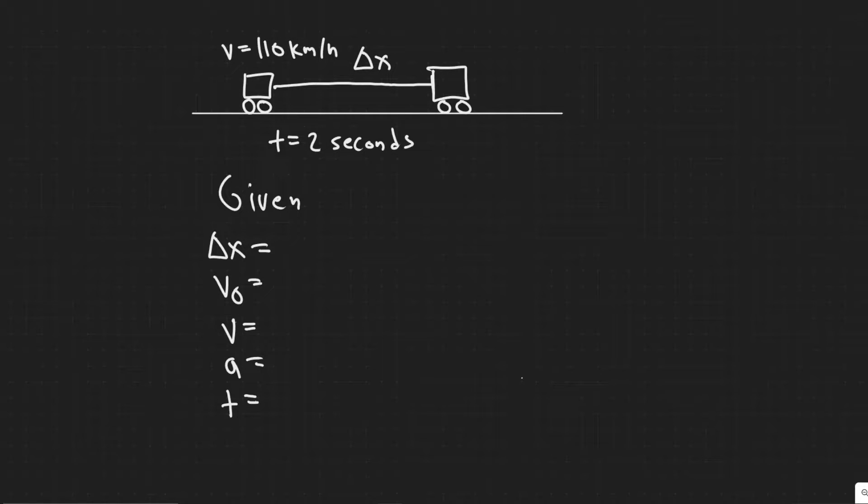Your final velocity is the velocity at the end of this interval. So whatever your speed would be when you finish this distance, right? So your velocity there.